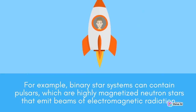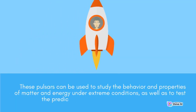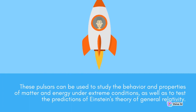For example, binary star systems can contain pulsars, which are highly magnetized neutron stars that emit beams of electromagnetic radiation. These pulsars can be used to study the behavior and properties of matter and energy under extreme conditions, as well as to test the predictions of Einstein's theory of general relativity.